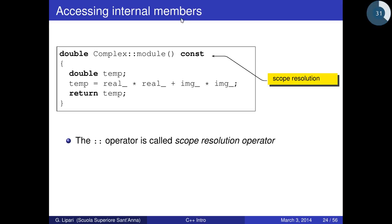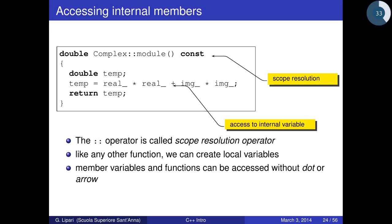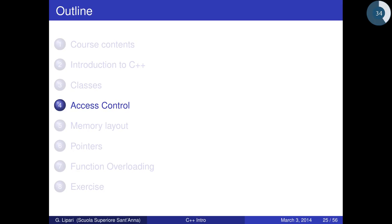The :: operator is called the scope resolution operator and tells the compiler that a function is defined inside a particular class. Inside member functions, we can create local variables and access member variables without dot or arrow notation.